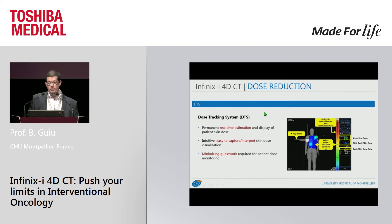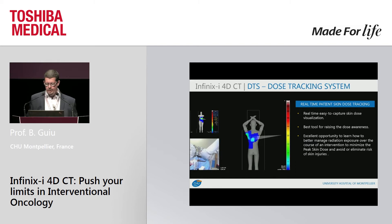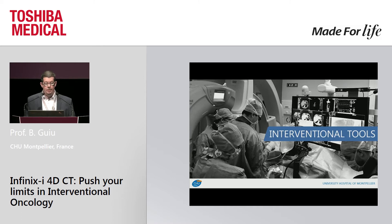Last example of dose reduction tools: the dose tracking system. This system allows real-time estimation of patient skin dose, showing peak skin dose, fourth peak skin dose, and peak skin dose rate. During the procedure you have no time to look at figures, but interestingly, the DTS provides a color-coded skin dose distribution. So it's very easy to see during the procedure if you are burning the skin. You can modify the angulation of the C-arm to better manage radiation exposure and minimize the risk of skin injury — a very useful and very visual tool.